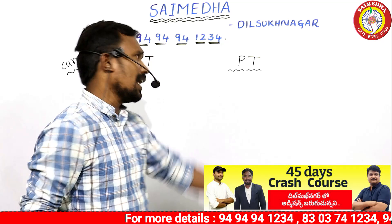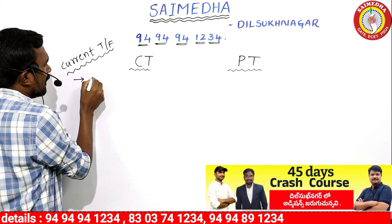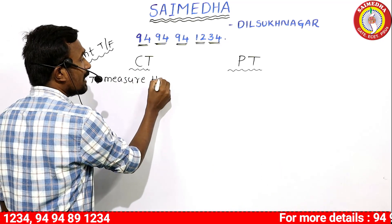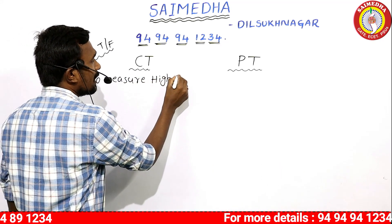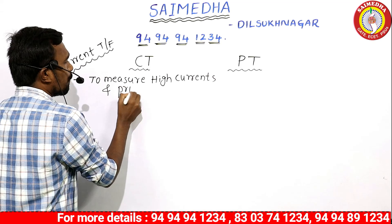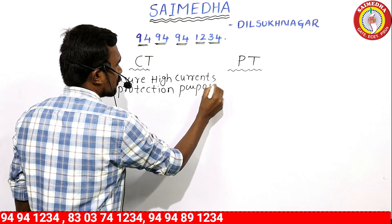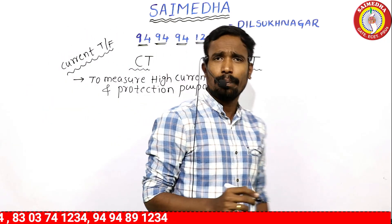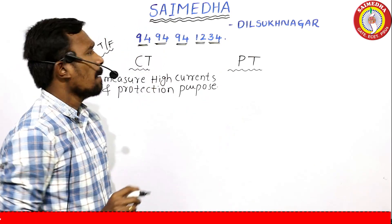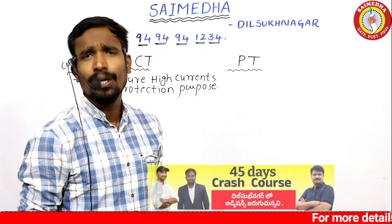Voltage Transformer is a Potential Transformer. Now, what is CTPT used for? We use it to measure high currents. We use it for the protection system. The PT, or Potential Transformer, is used for high voltage measurement and also for the protection system.